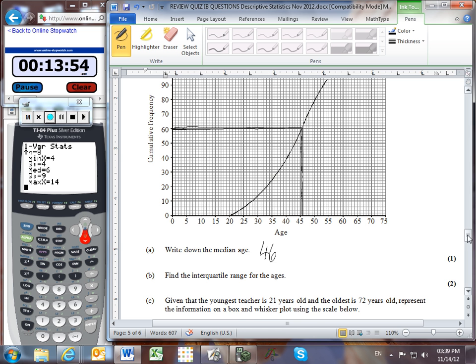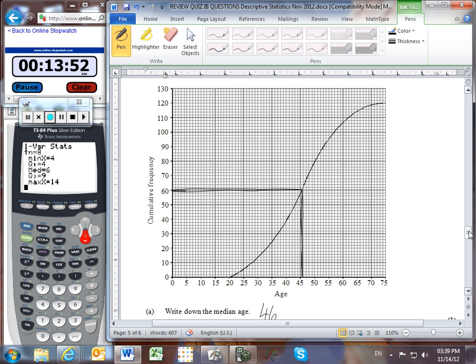The interquartile range, so halfway between the median and the max of 120, is 90. So we'll trace across a line at 90, and trace down to see where it meets the bottom.